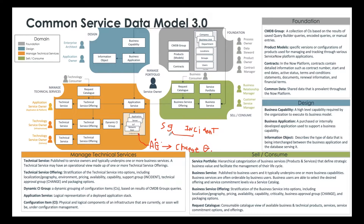Moving forward, we need to be very specific in our attributes. Assignment group, which is now labeled change group, really should be used for change. And support group really should be used for incident, even if it's the same value in each. Customers can work at synchronizing those when they're the same, but we need to make sure that consistently across the board, each of those attributes is used for those particular functions.